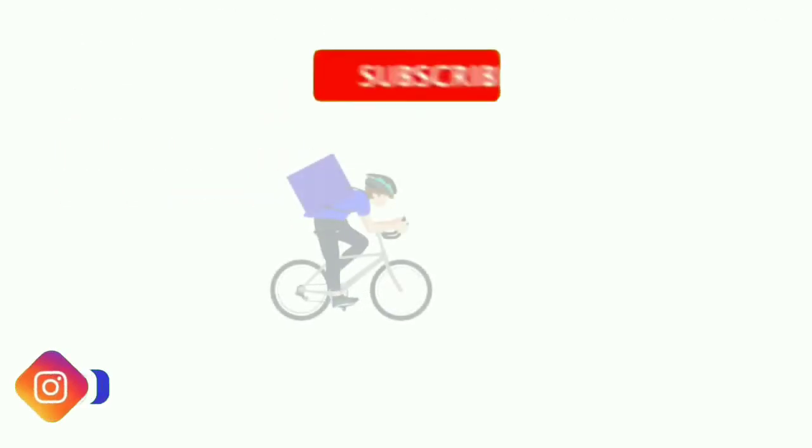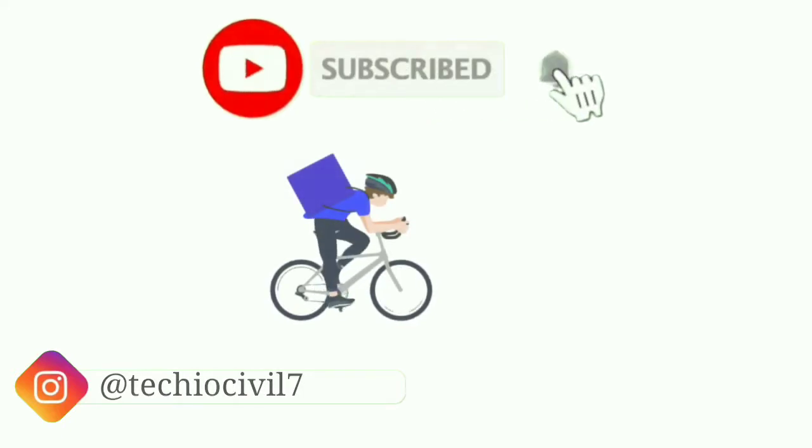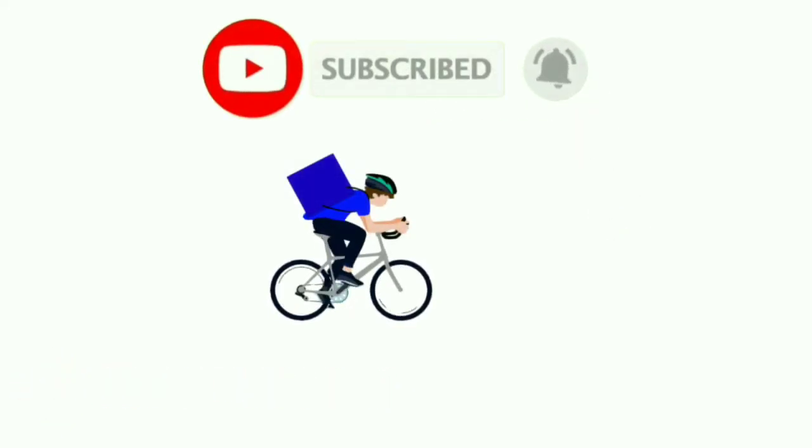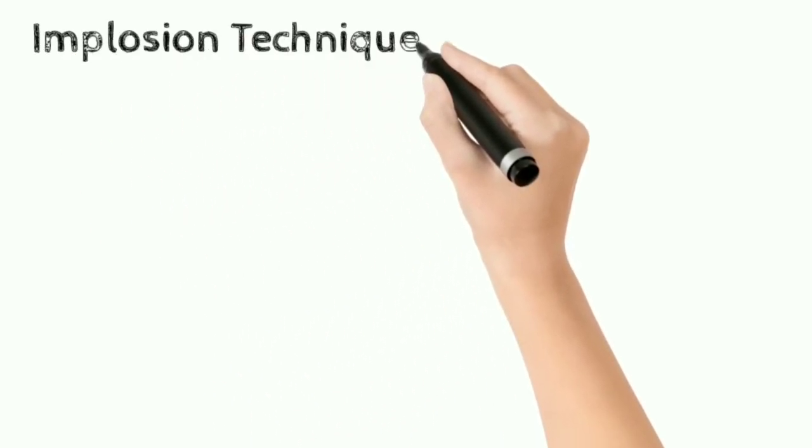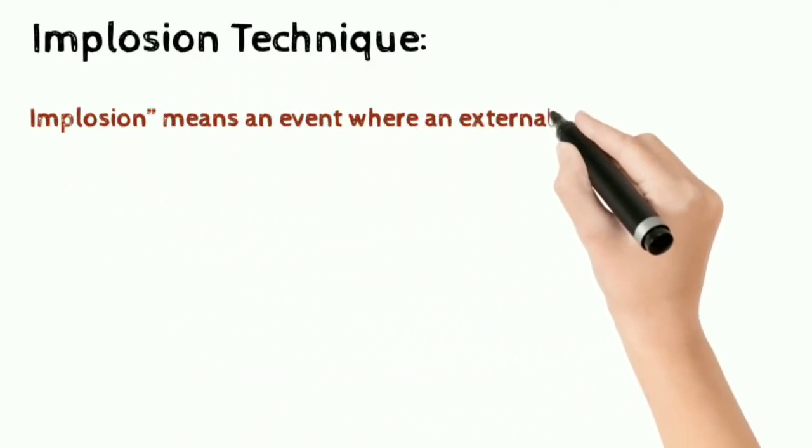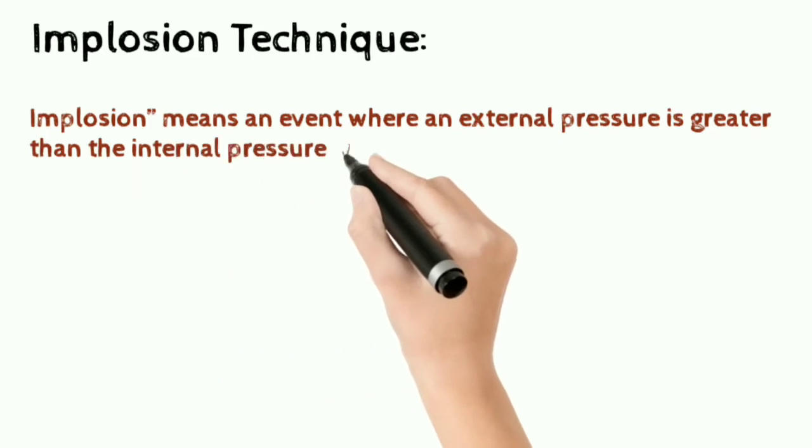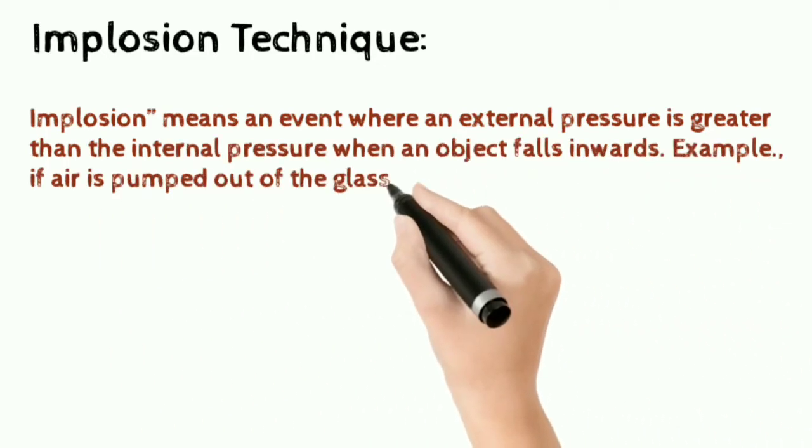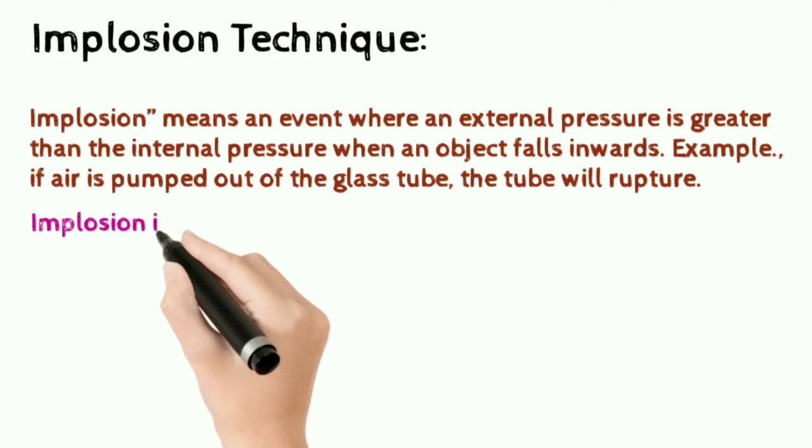Now I am going to explain the implosion technique of demolition. The other methods are not more important and not widely used, that's why I am going to explain implosion technique. Implosion technique: Implosion means an event where external pressure is greater than the internal pressure when an object falls inwards. Example: if air is pumped out of a glass tube, the tube will rupture.